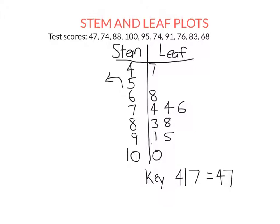So we can get some key features in the stem and leaf plot. So we can see very clearly that the mode is 74. That's the only score that occurred more than once. We can see that the range is 100 minus 47, which is 53.